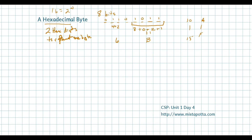This is going to be important for us to notice. A byte is 8 bits, so that's 2 to the 8th, or 256 values. In other words, we're going to be talking about values that start at 0 and go up to 255.